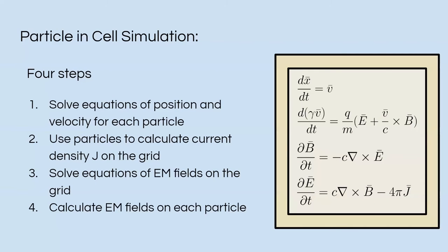Here's a bit more about how the simulation works. We have four steps. First, we solve the first two equations for a position of velocity on every single particle, and then we sum up all the particles to calculate the current density J on the grid. We use the next two equations to solve the equations of the electromagnetic fields on the grid, and then we calculate the electrical and magnetic fields on each particle.